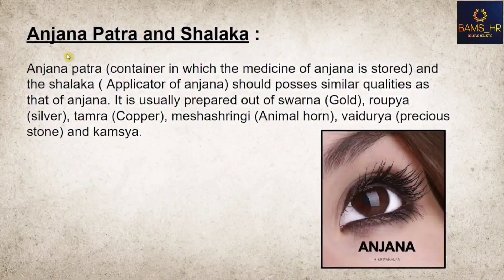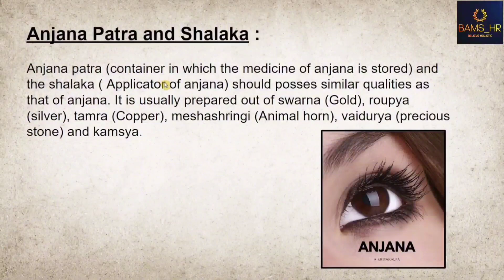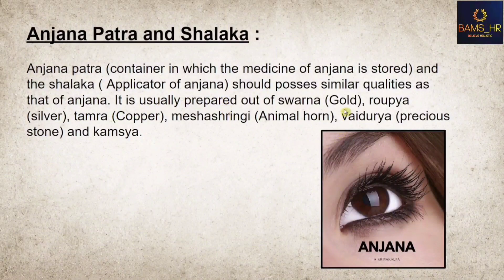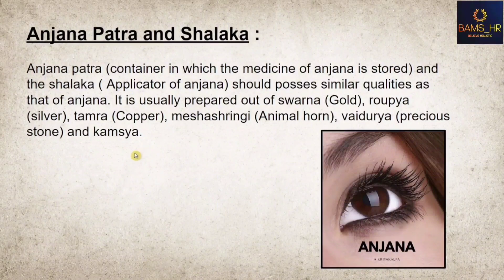Anjana Patra is a container in which the medicine of Anjana is stored. Shalaka is the applicator of Anjana through which it is applied. Both Anjana Patra and Shalaka are usually prepared from Swarna (gold), Raupya (silver), Tamra (copper), Mesh Shringi, Vaidurya, and Kamsi. These are the materials used for making the Anjana Shalaka and Anjana Patra.